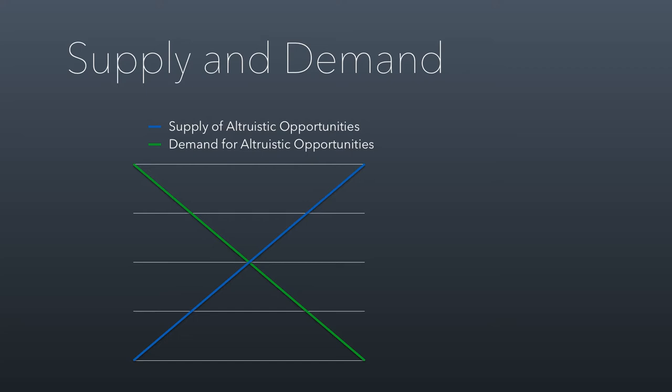First of all, the demand for altruistic opportunities is downward sloping. What that means is as opportunities for altruism get cheaper, more people will want to buy them. If immunizing one child from basic communicable diseases cost a hundred thousand dollars each, you wouldn't have very many people buying them simply because they can't afford it. But if immunizing a child costs just five cents a piece, a lot more people will fund that activity — that's why the demand curve is downward sloping.